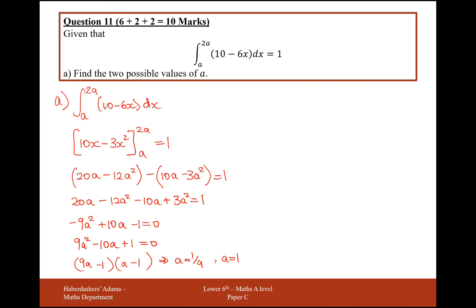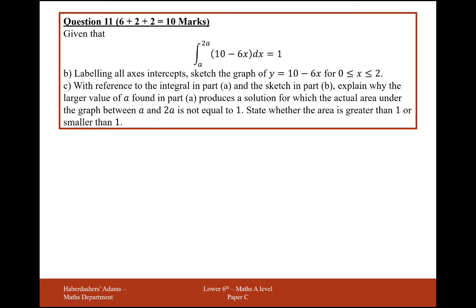So the next part of this, labelling all axes and intercepts, sketch the graph of y equals 10 minus 6x from 0 to 2. That seems easy enough. Start at 10 from 10 minus 6x. The next coordinate, x is 1, will give you a 4.